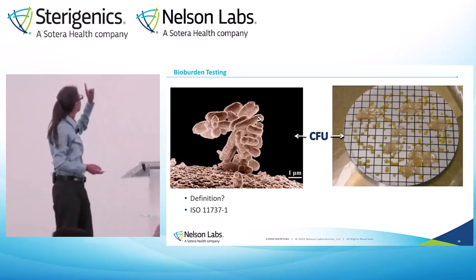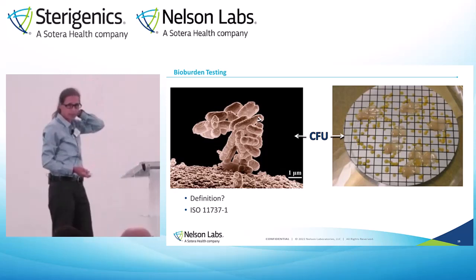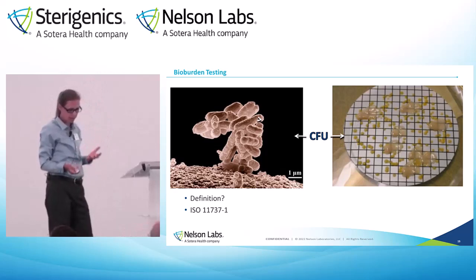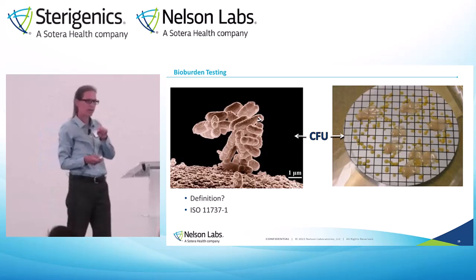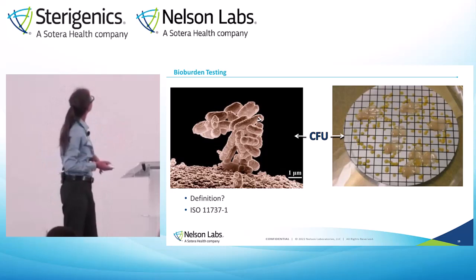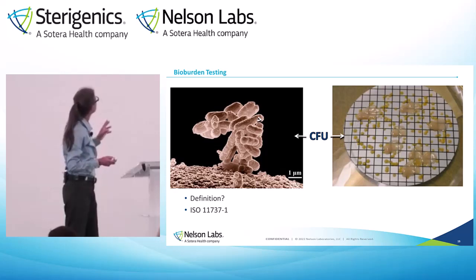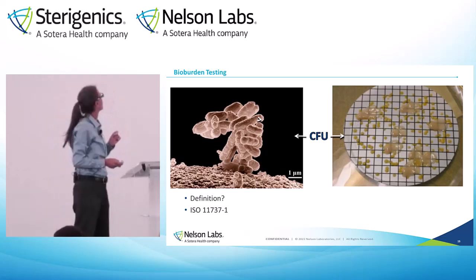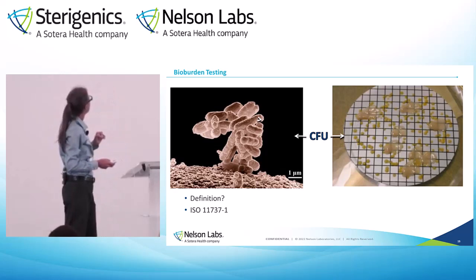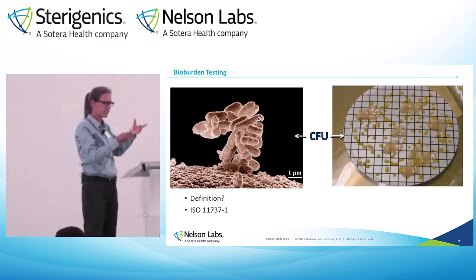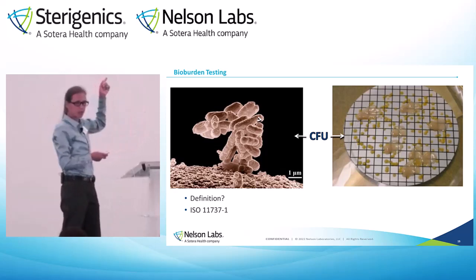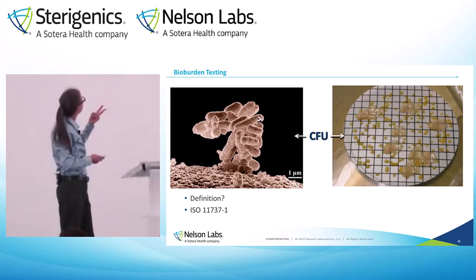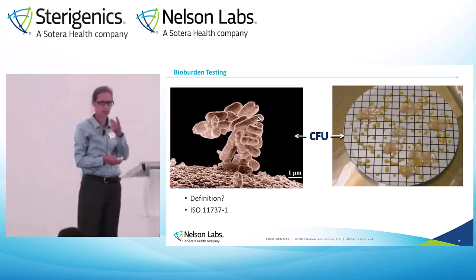Here's a bioburden plate with quite a few little colonies on it. If you were trying to figure out what to gram stain, you might notice two really easily — I see a yellow one, which is probably a micrococcus and won't be bad, and a light tan, mucoid-looking one. Probably two different organisms on the bioburden, but you might have 100 CFU — it's just two different bugs.